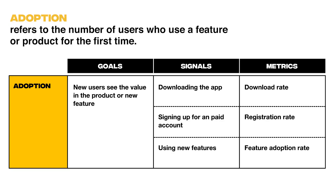Adoption is quite simple and usually refers to the number of users who use a feature or product for the first time. Signals of adoption can include downloading the app, signing up for an account, or using new features. Metrics could be download rate, registration rate, and feature adoption rate.